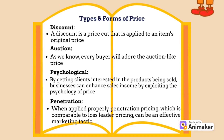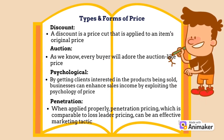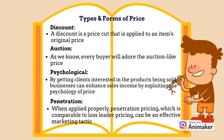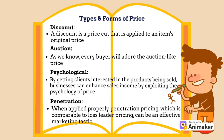Firstly, is discount. A discount is a price cut that is applied to an item's original price. Secondly, is auction. Every buyer will adore the auction-like price. Thirdly, is psychological. By getting clients interested in the products being sold, businesses can enhance sales income by exploiting the psychology of price. Fourthly, is penetration. When applied properly, penetration pricing, which is comparable to loss leader pricing, can be an effective marketing tactic.